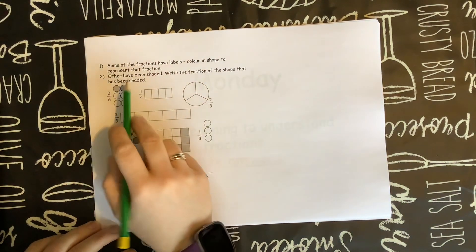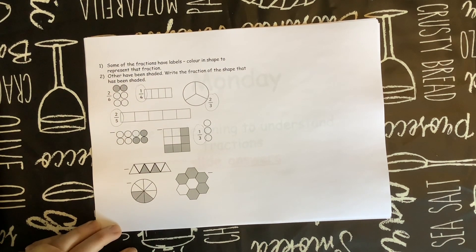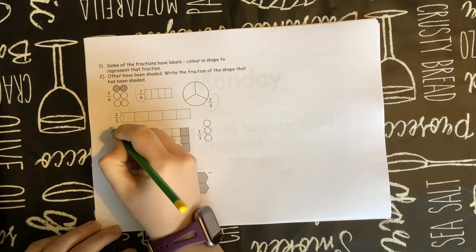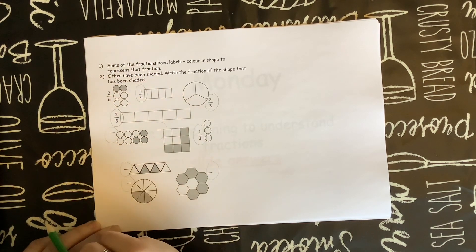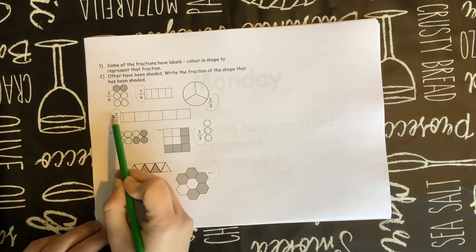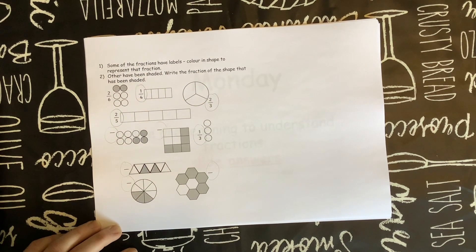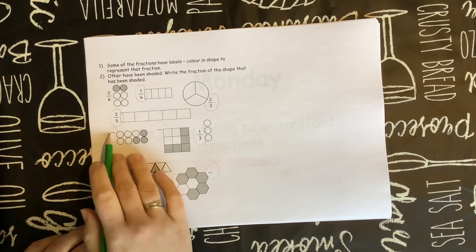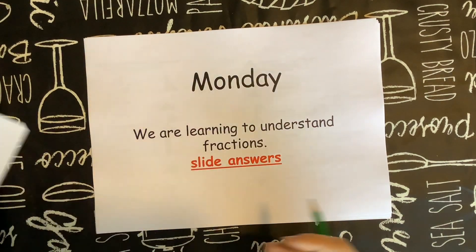The last worksheet: some fractions have labels and some shapes have been shaded but have missing labels. If it has a label, shade the right amount — a quarter of this shape, two thirds of this shape, two fifths of this shape, and one third of this shape. For the shapes without labels, count how many pieces are shaded and how many in total, then write the fraction next to the shape. Please pause the video and have a go, because I will be going through the answers.